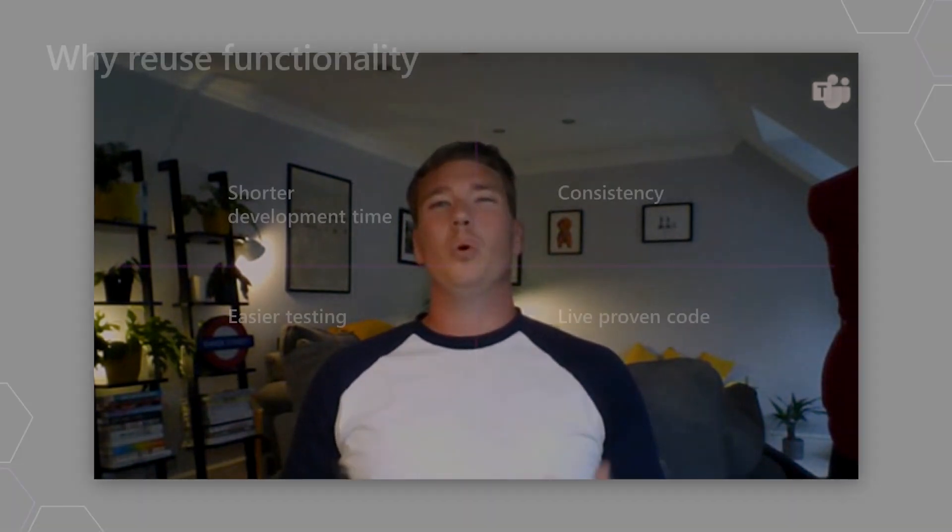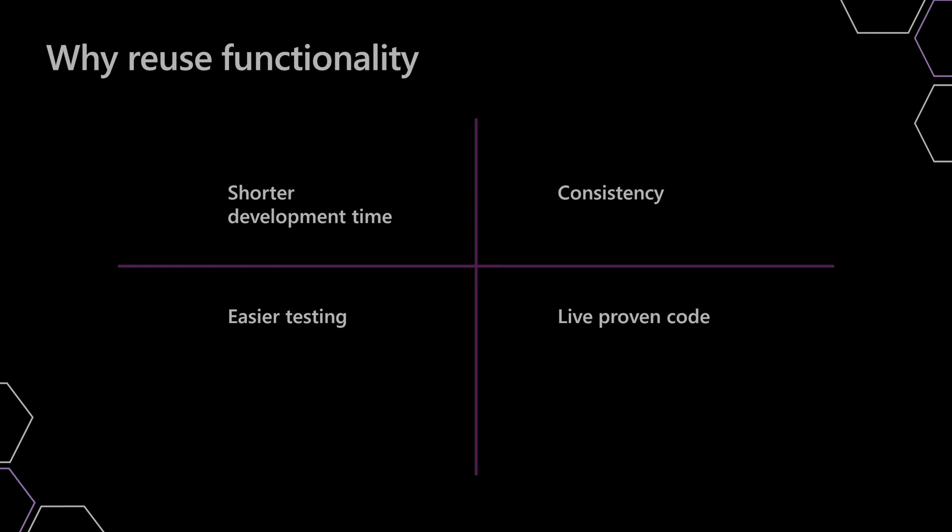And point number four — something we almost take for granted sometimes, specifically as devs — the live proven code. If we have app one that's been deployed, it's been sat in production, being used within our mobile app for six months, a year, then we don't really have to think about that little bit of functionality, or that bit of functionality, or that bit of functionality. It's already in production, it's already proven, and we know it's going to scale up and scale down as we need.